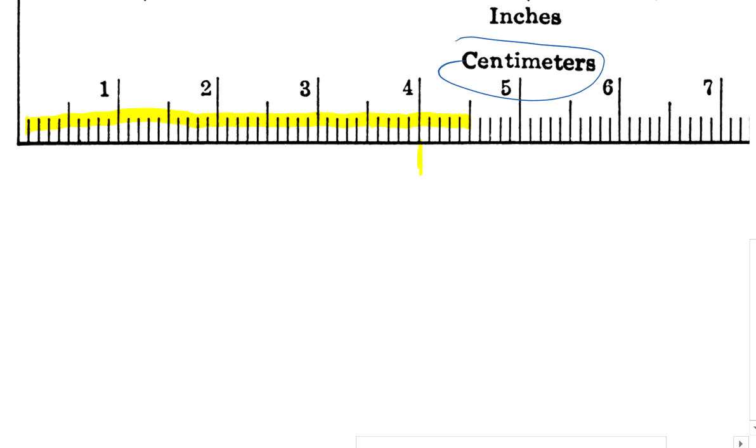And each line here represents a tenth of a centimeter. So up to this point here, I have 5 tenths, meaning that I would have 4.5 tenths of a centimeter. So 4.5 there.